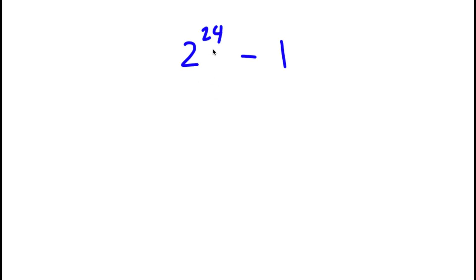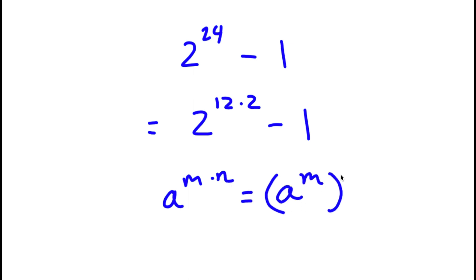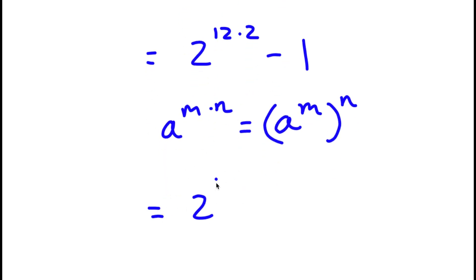So I have 2 to the power of 24 minus 1. Now, 2 to the power of 24 is the same thing as 2 to the power of 12 times 2, minus 1. And if I have something in the form a to the power of m times n, this is equal to a to the power of m to the power of n. So in this case, 2 to the power of 12 times 2 is the same thing as 2 to the power of 12 to the power of 2, and I have this minus 1.